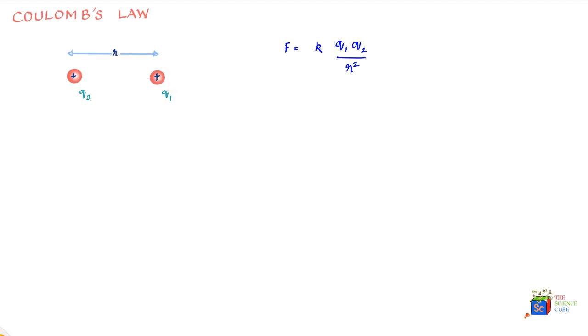Here k is the electrostatic constant or often called the Coulomb's constant. Since force is a vector quantity, we must write this equation in vector form.